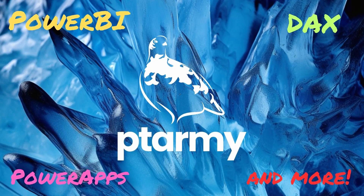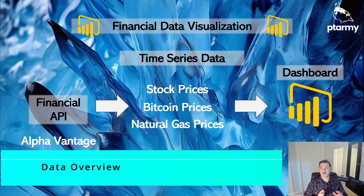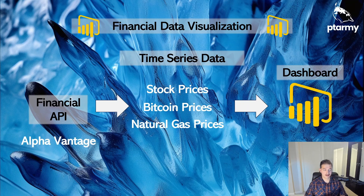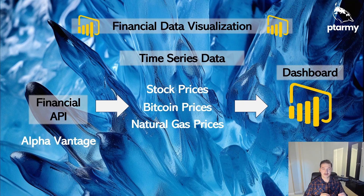Our data source is a financial API from a company called Alpha Vantage. They have a free and a premium version — everything in this video is entirely free, so no startup costs to recreate what we're doing. You can skip to the end and download the template linked below, which has all the same connections. An API is simply a connection to a data source that allows us to right-click refresh and pull fresh data very quickly.